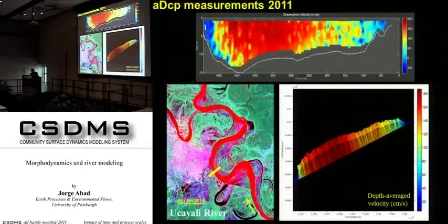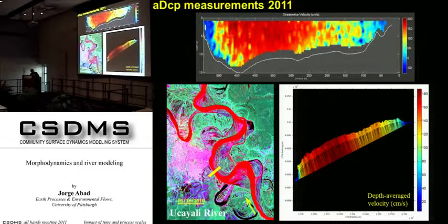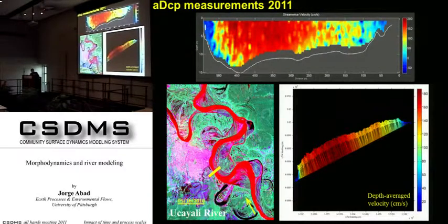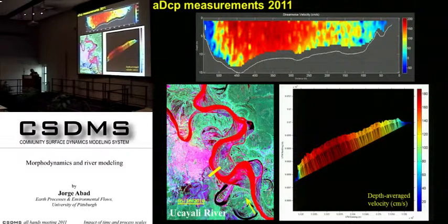First, we did bathymetric measurements, and then we did ADCP measurements across several cross sections. In a cross section near the city, outside of this bend, you can see that depth-averaged velocities are higher in the outer bank. The cross-sectional profile shows higher velocities in the water column near the outer bank — these are streamwise velocity contours — giving a scour region near the outer bank. This is typical behavior of a meandering channel.